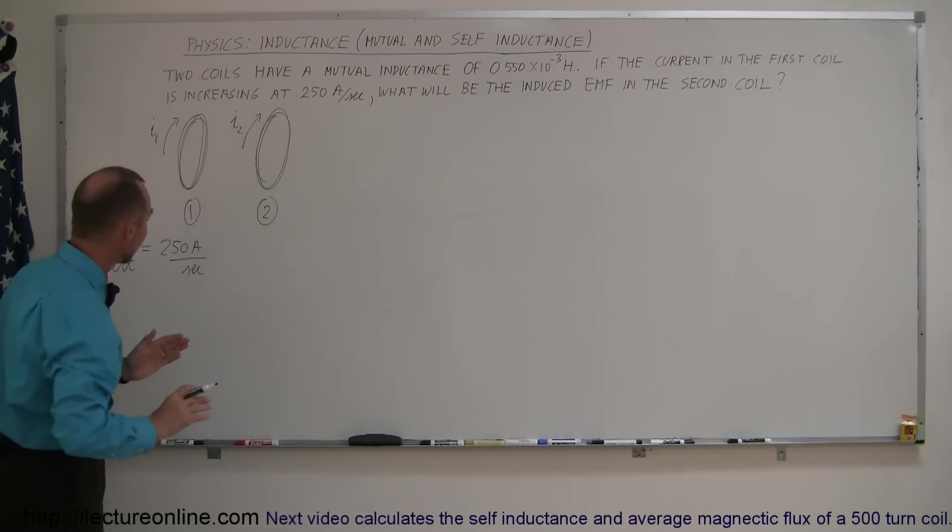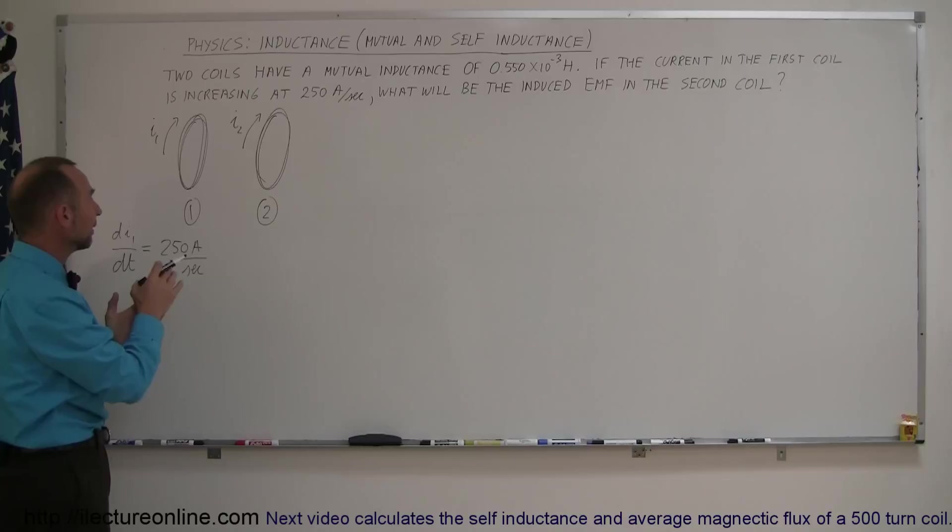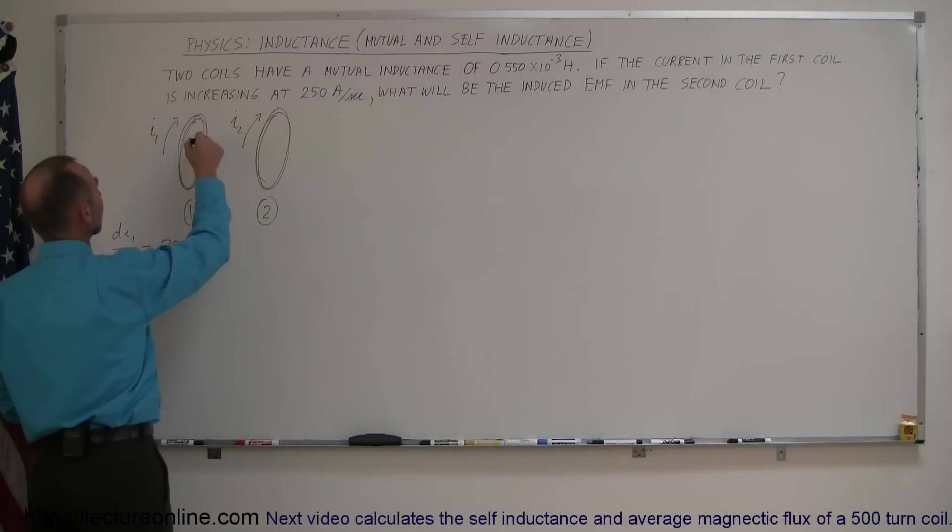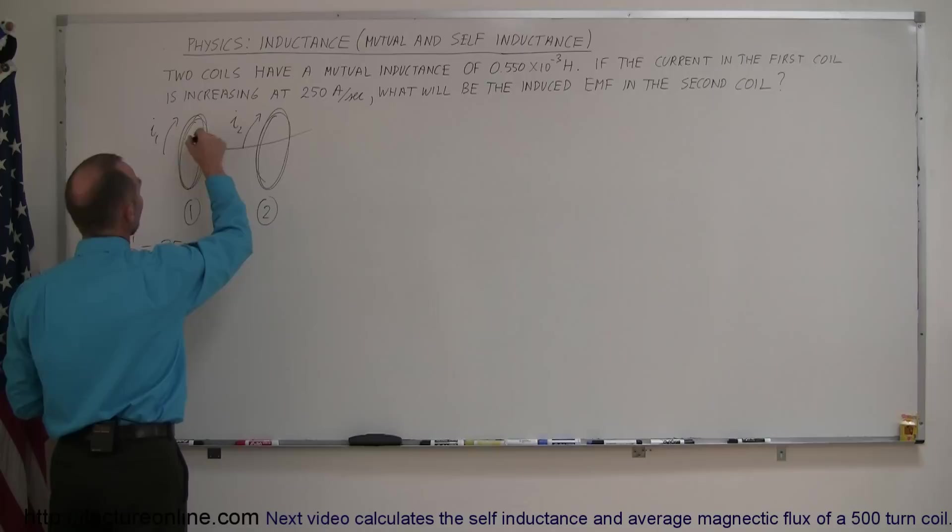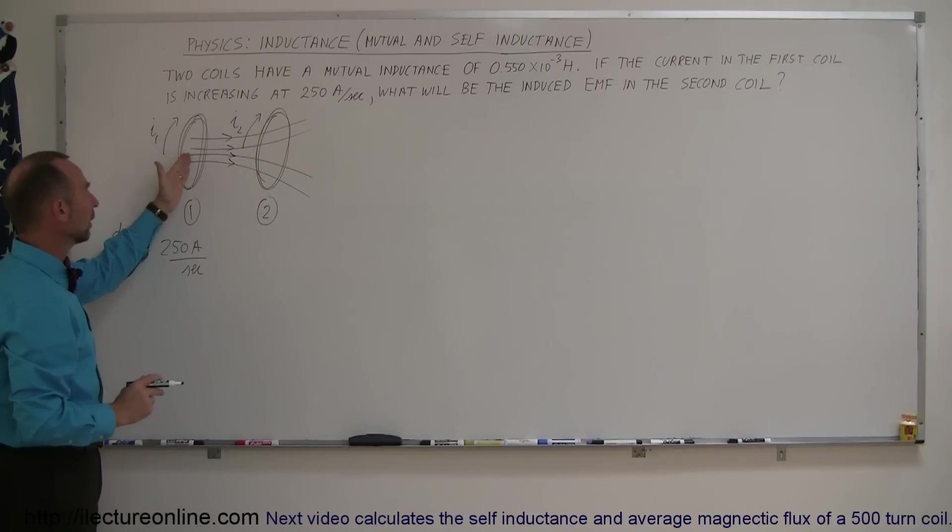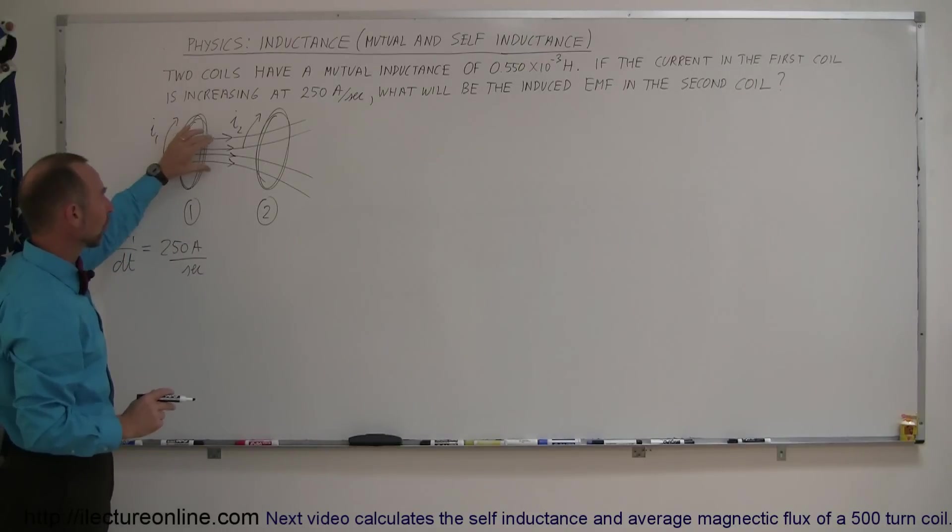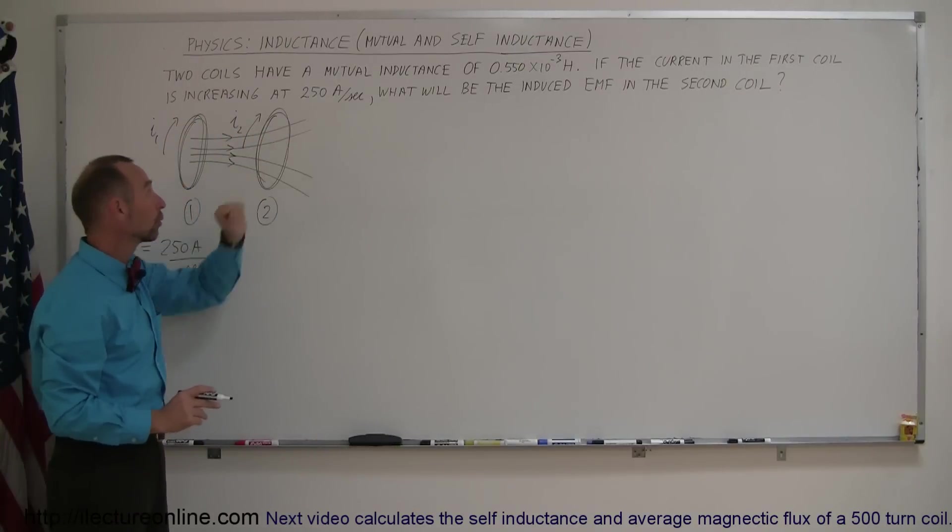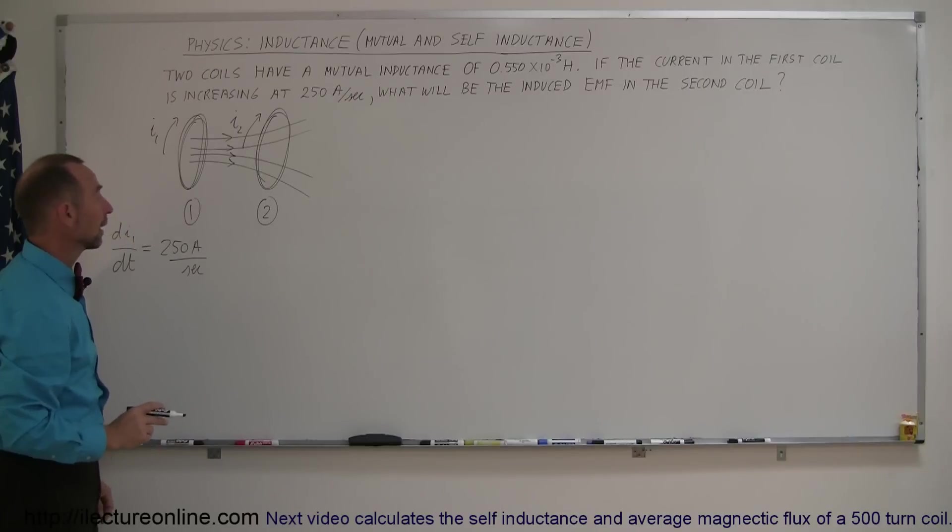Now, before the coil, let's say before the current in coil 1 changes, imagine that there's a magnetic field in coil 1 that goes through coil 1 that also goes through coil 2. So, if there's a current in coil 1, there will be a magnetic field through coil 1 which will also go through coil number 2.